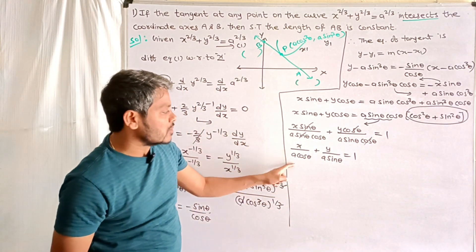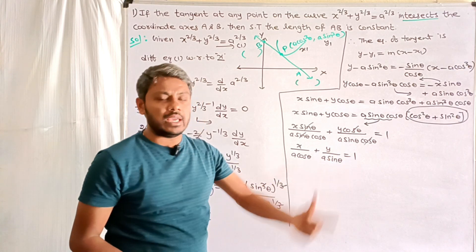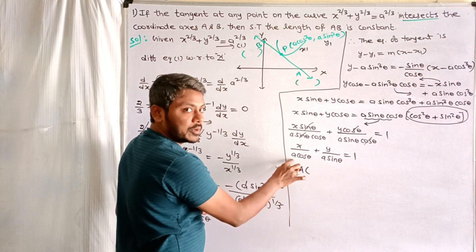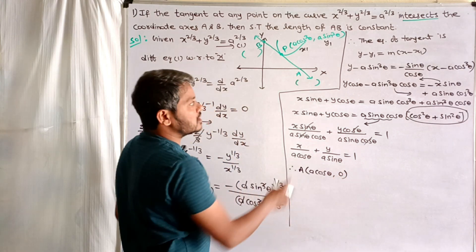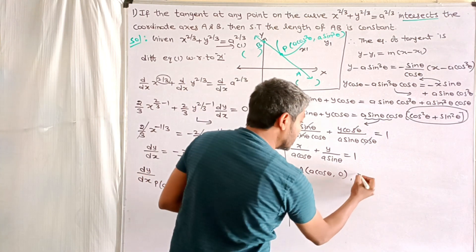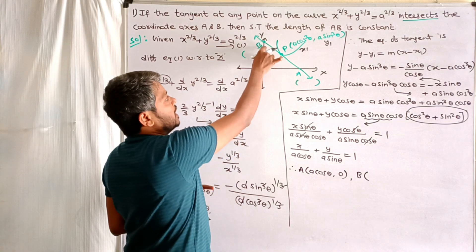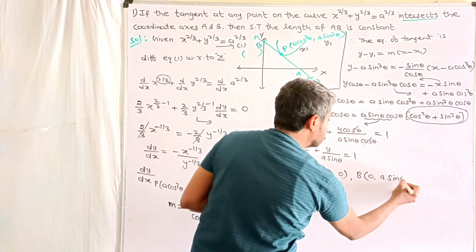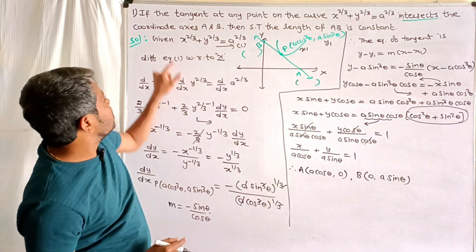This is of the intercept form x/a + y/b = 1, where x-intercept is a cosθ and y-intercept is a sinθ. Therefore point A = (a cosθ, 0) on the x-axis, and point B = (0, a sinθ) on the y-axis. We have found both points A and B.